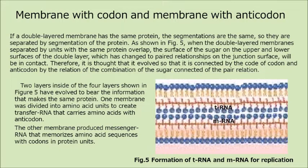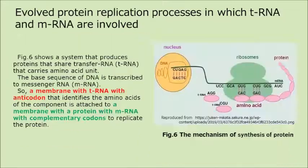Two layers inside of the four layers shown in figure 5 have evolved to bear the information that makes the same protein. One membrane was divided into amino acid units to create transfer RNA that carries amino acids with anticodon. The other membrane produced messenger RNA that memorizes amino acid sequences with codons in protein units. Figure 6 shows a system that produces proteins that share transfer RNA carrying amino acid units.